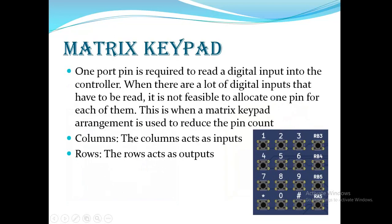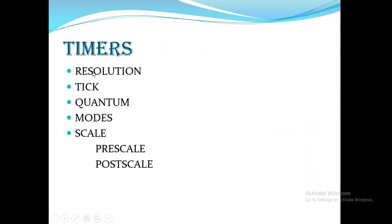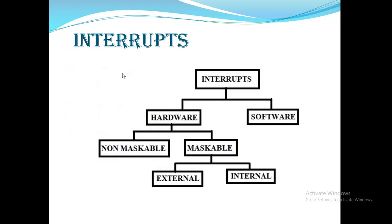The matrix keypad has 4 rows and 4 columns — 16 keys total. Columns are accessed as inputs and rows as outputs. Timers have properties including resolution (register width), tick (up or down counting), quantum (system clock settings), and pre-scaling and post-scaling with ratios like 1:2 or 1:4.